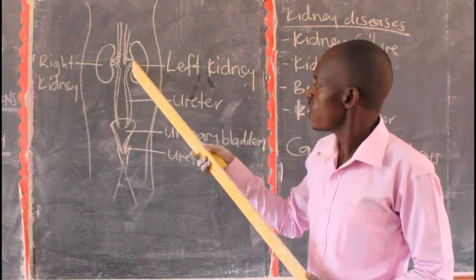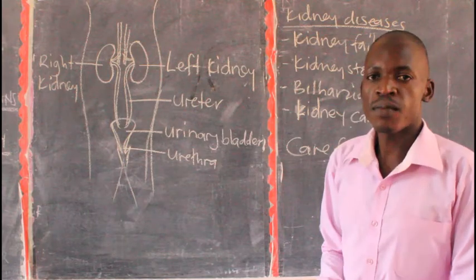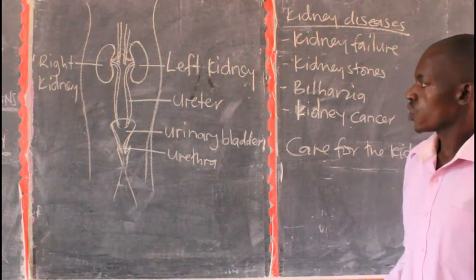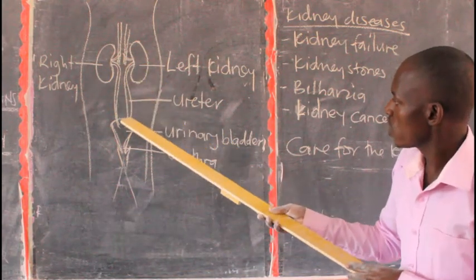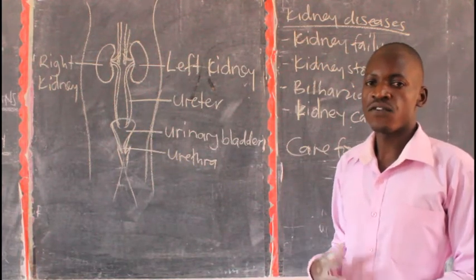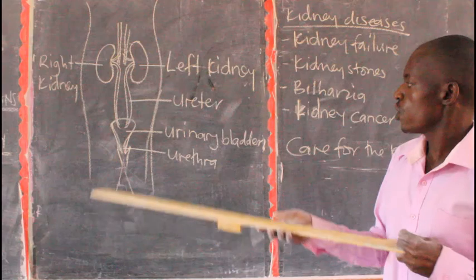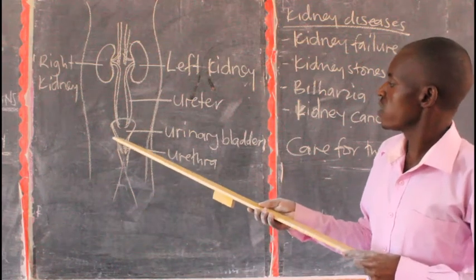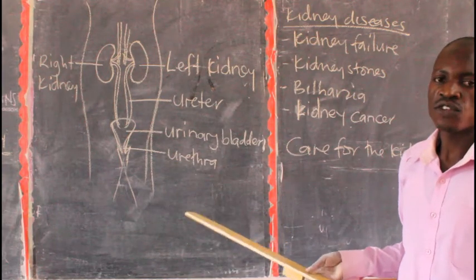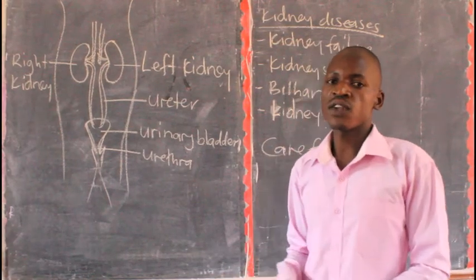The urine which is filtered here moves and passes to the urinary bladder. The importance of the urinary bladder is to store urine for a short time before it is taken out. After the ureter carries the urine, it brings it into the urinary bladder, which stores the urine for a short period of time. Afterwards, when the body signals that there is too much urine in the urinary bladder, the urine is taken out by the urethra. The function of the urethra is to pass urine out of the urinary bladder.